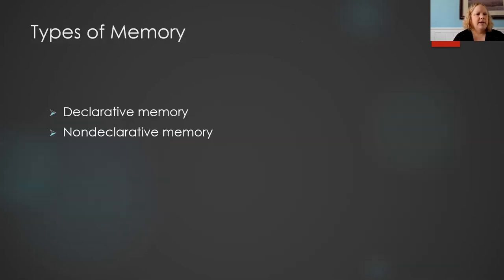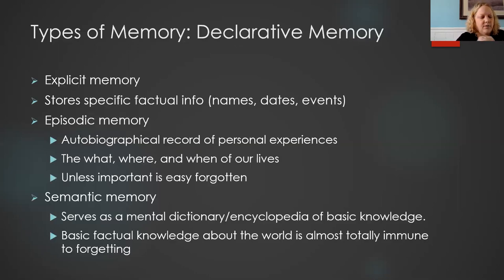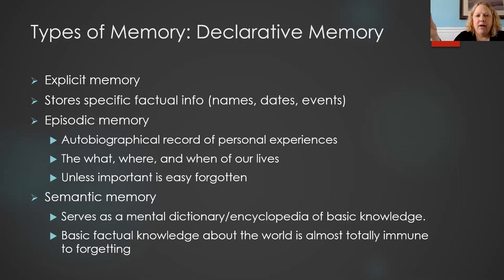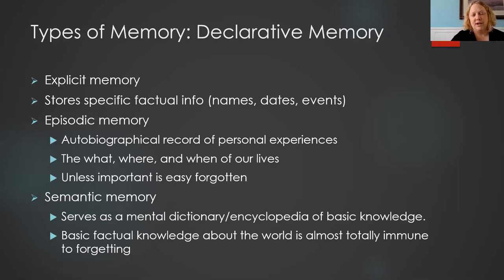The next thing we're going to talk about is declarative and non-declarative memory. Declarative memory consists of our explicit memories — memories we are explicitly aware that we are accessing. If I say 'Columbus sailed the ocean blue in...' and you fill in the year, that is an explicit memory. These are usually based around facts. We also have episodic memory — explicit memories of our own life: who was there, when it happened, where it happened, and what happened.